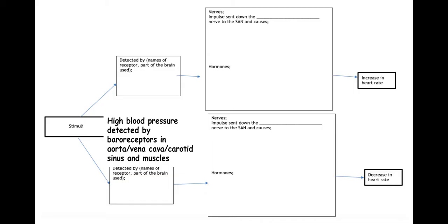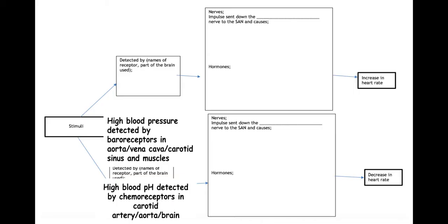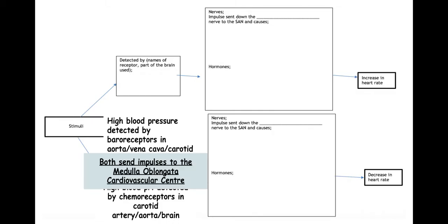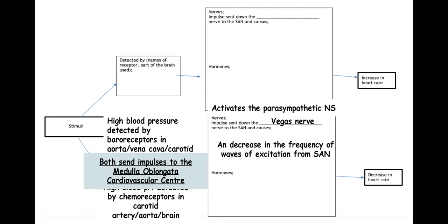Now let's look at the opposite. The baroreceptors and chemoreceptors will do the same job here, but they will detect either a high blood pressure or a high blood pH. They will both send impulses to the cardiovascular centre in the medulla oblongata, but this time it will activate the parasympathetic nervous system. This sends a nerve impulse down the vagus nerve to the SAN, causing a decrease in the frequency of waves of excitation from the SAN, which decreases the heart rate.